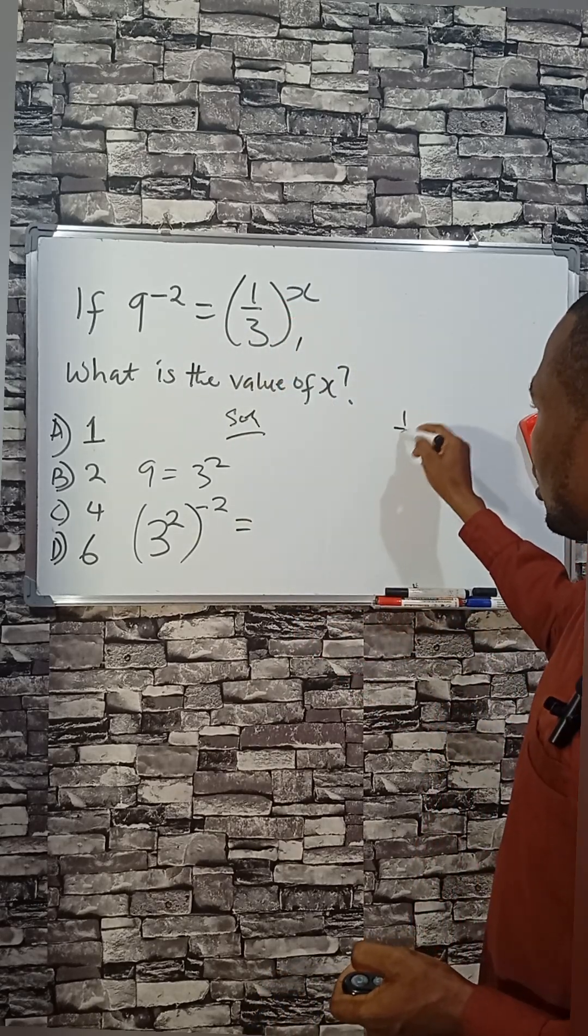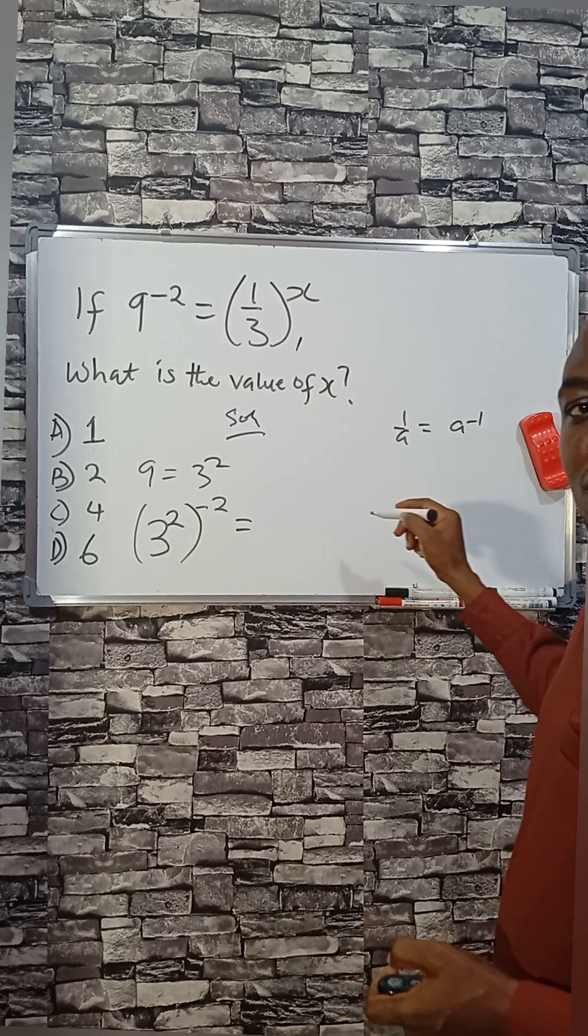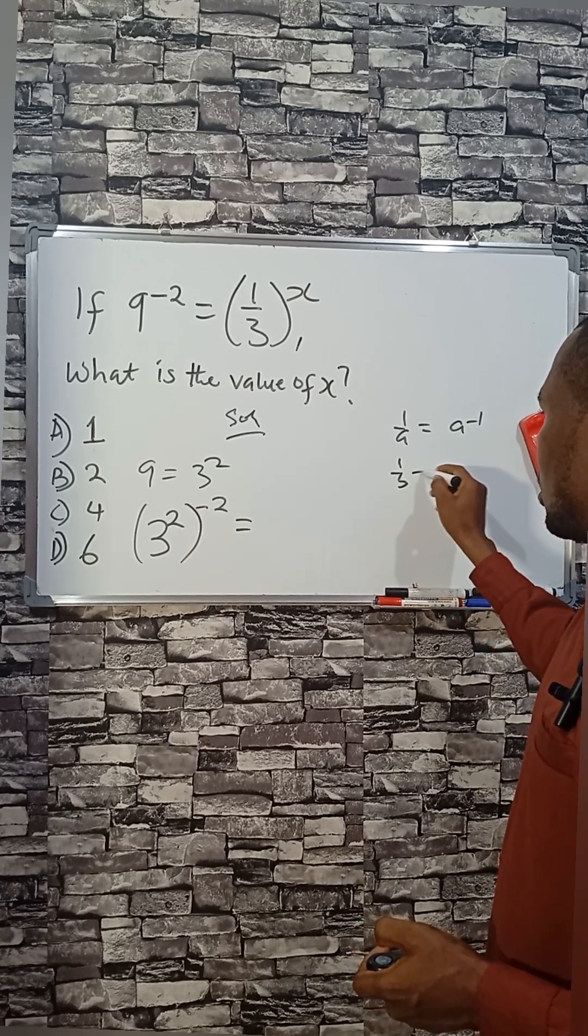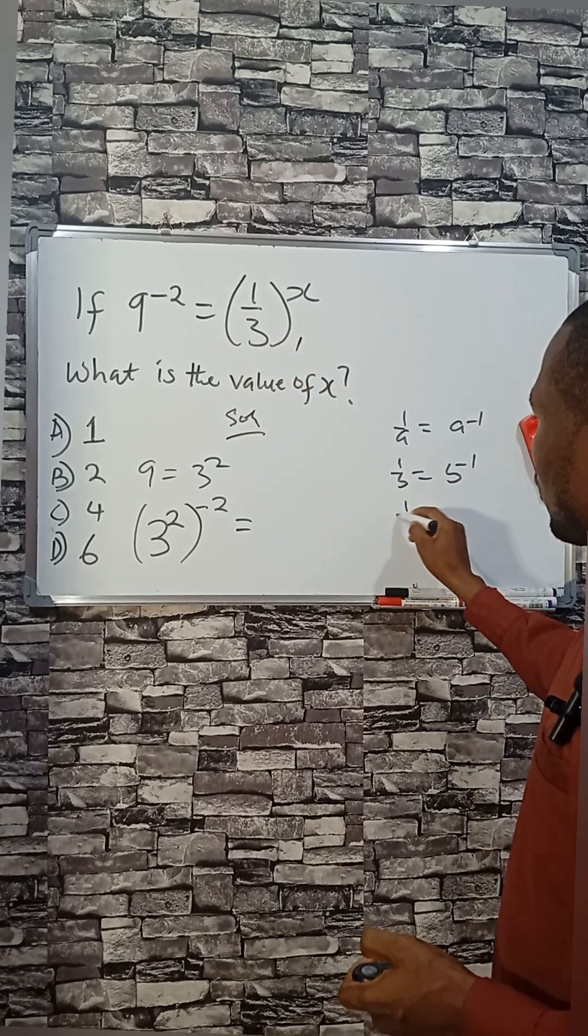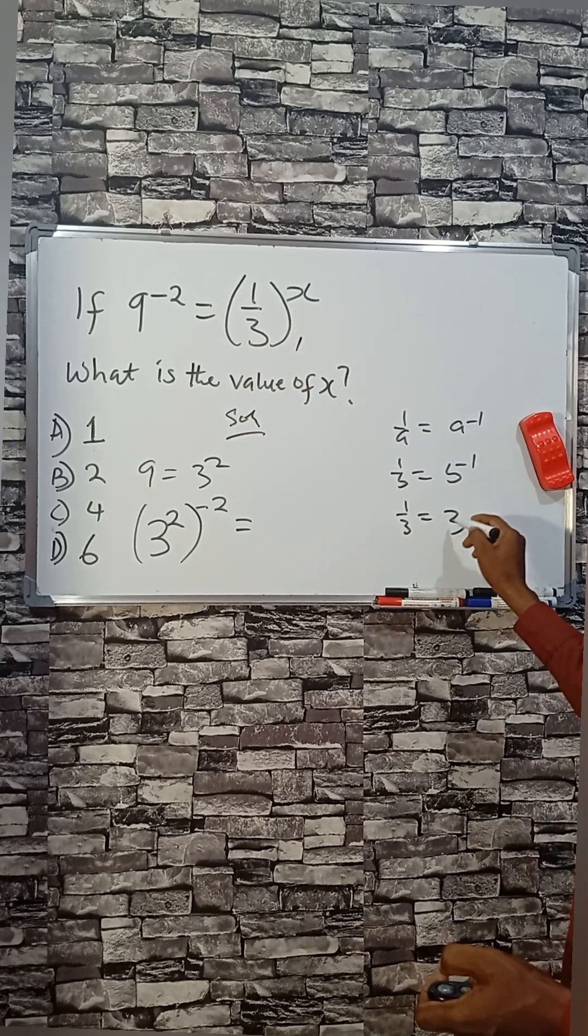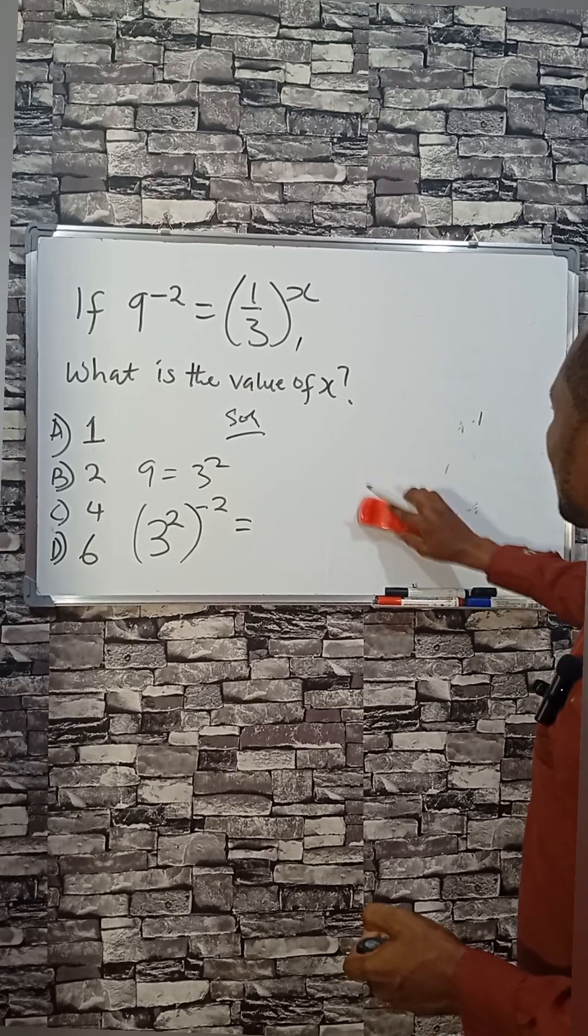If we have a to the power of a minus 1, or b to the power of b minus 1, we can have one of our 3 written as 3 raised to the power of minus 1.